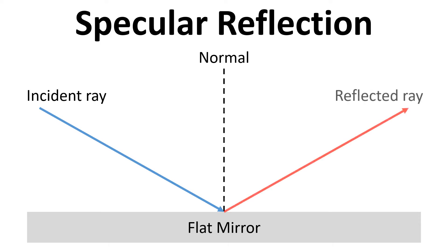That light ray will be reflected and we refer to that as the reflected ray. The angle between the normal and the incident ray is referred to as the angle of incidence.